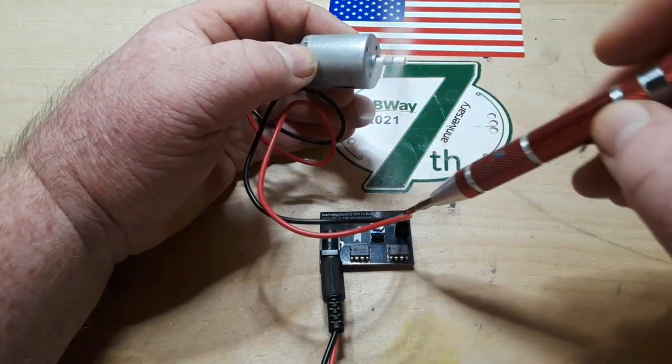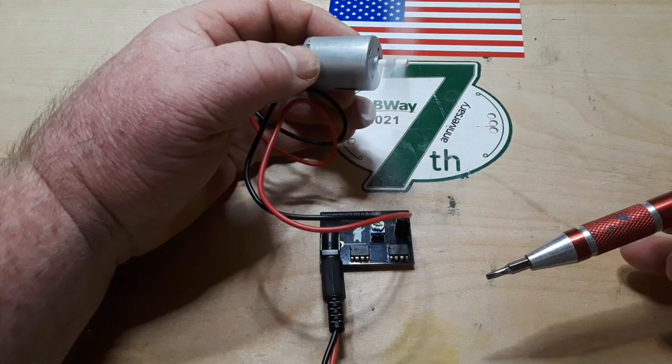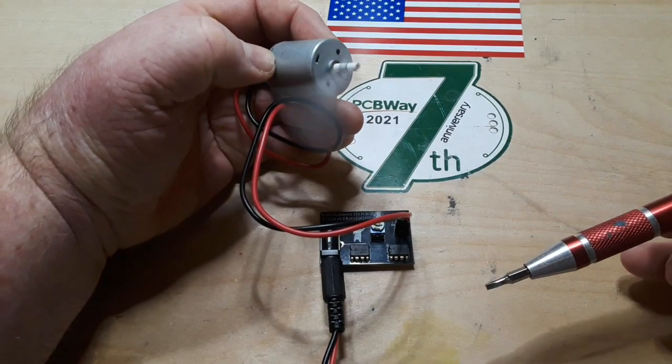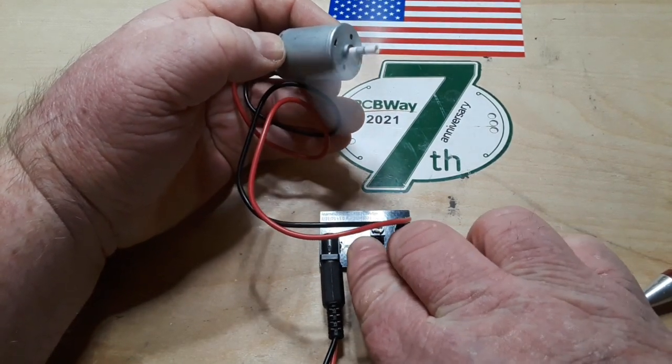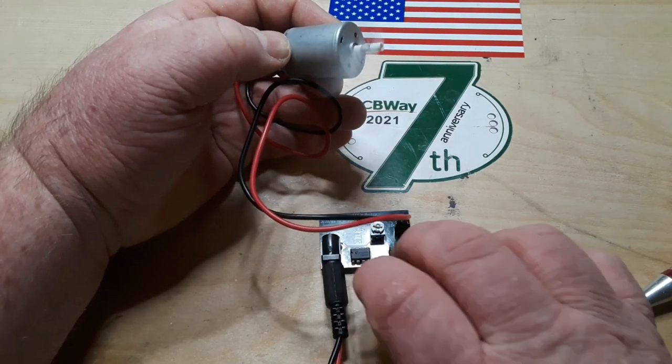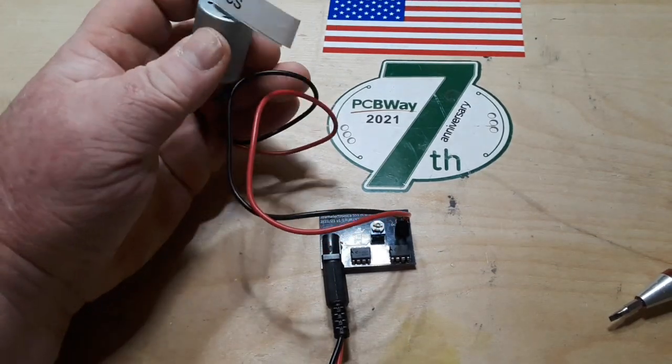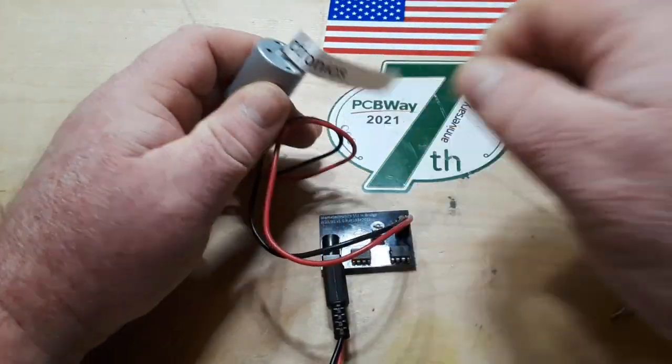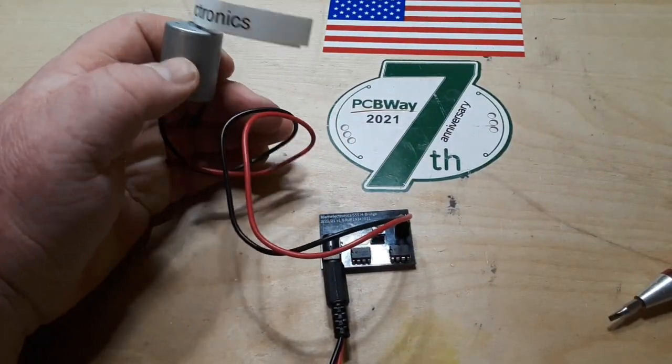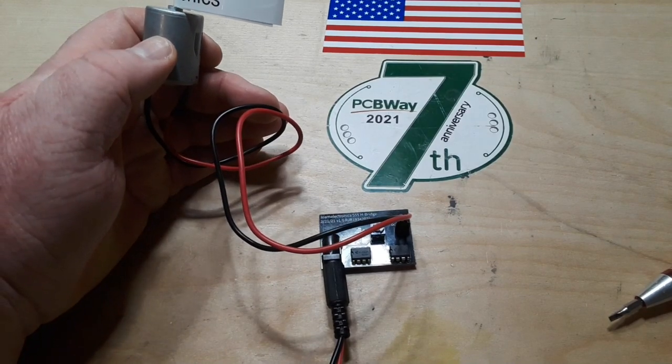Then when we switch it in the other direction, it flops off. I'm at the upper end of these, we're getting three watts out of this, so I'm going to kill it. But yeah, that's how you can make an H-bridge out of a 555 timer.